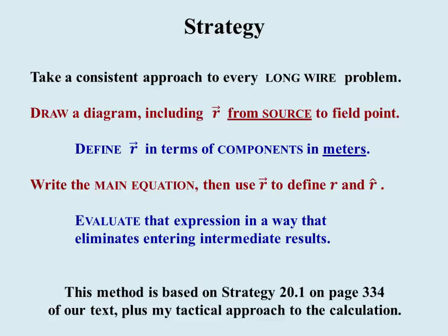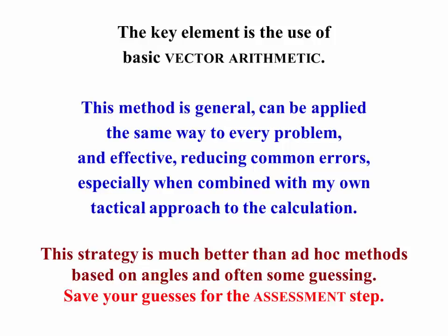Our strategy is the same as always. Once we have interpreted the problem as being a long wire producing a magnetic field, we'll draw, develop, draw a diagram that includes the R vector from the source to the field point, define it in terms of its components in meters. Then, as our develop step continues, write down the equation, the one you just saw, use our R vector to define the magnitude and unit vectors, and evaluate our expression. Again, as before, I'll be following a particular tactical approach to the calculation, like I did for electric fields. That approach makes sure that we use vector arithmetic, using what we know about vectors to do our calculations.